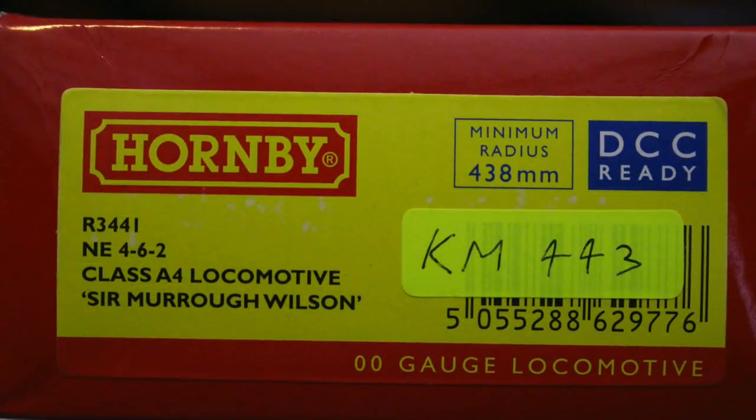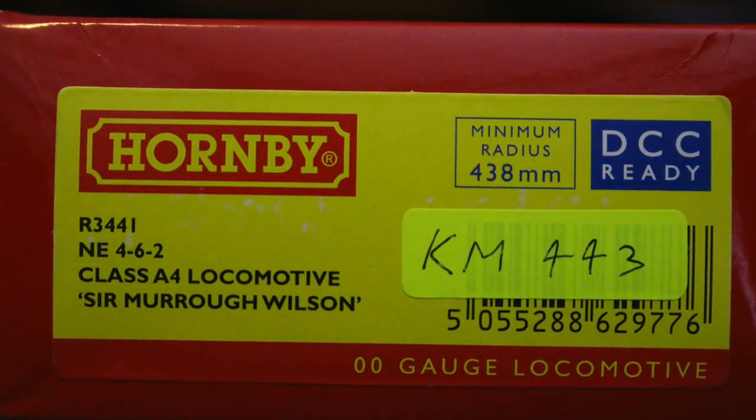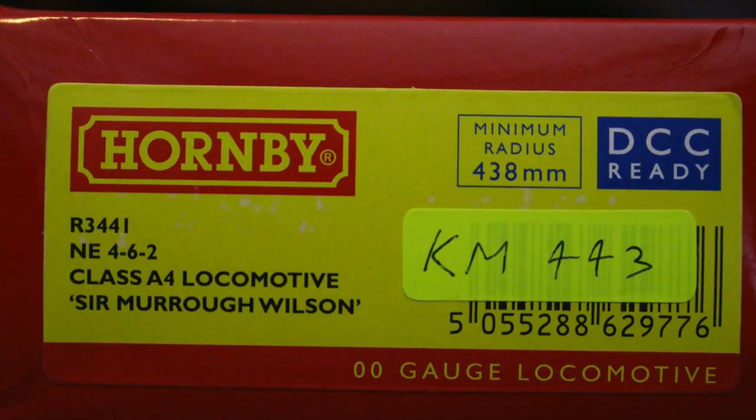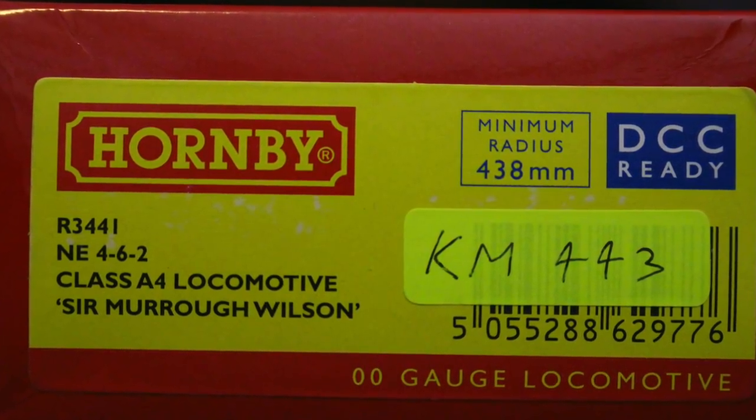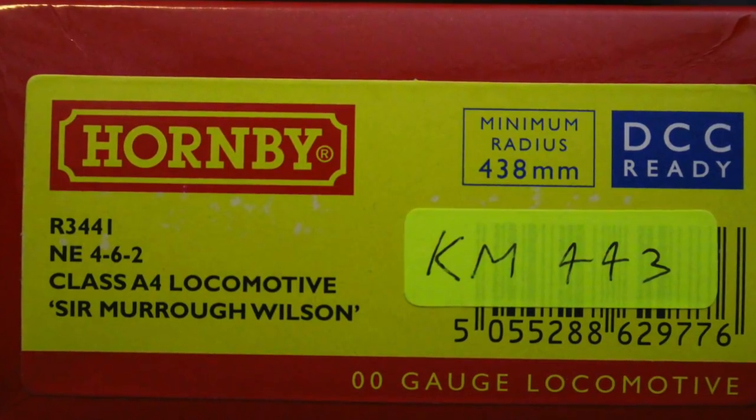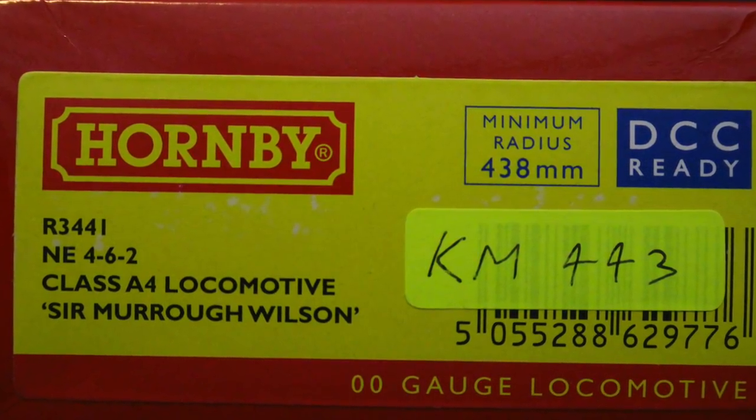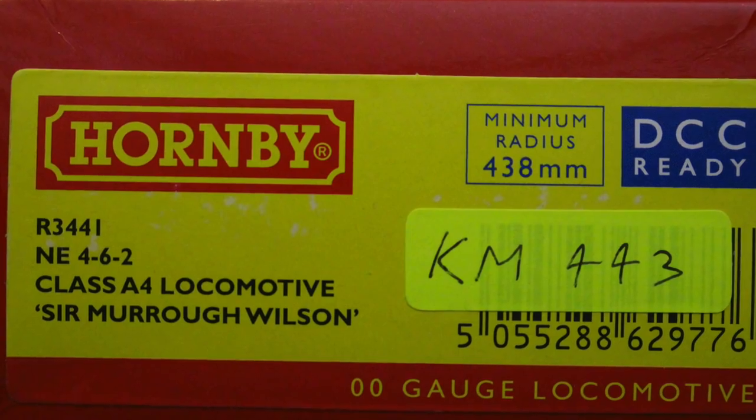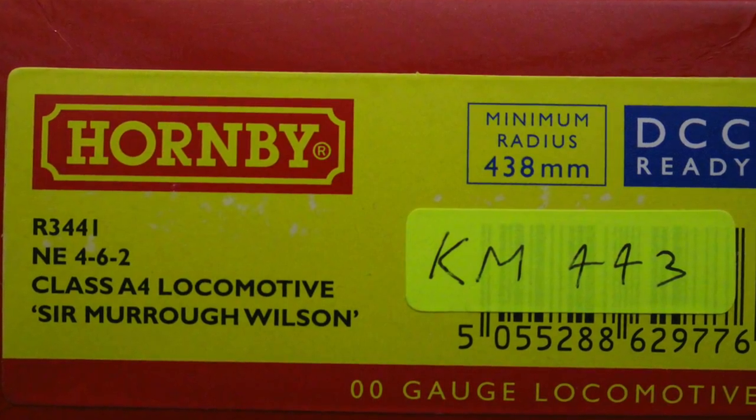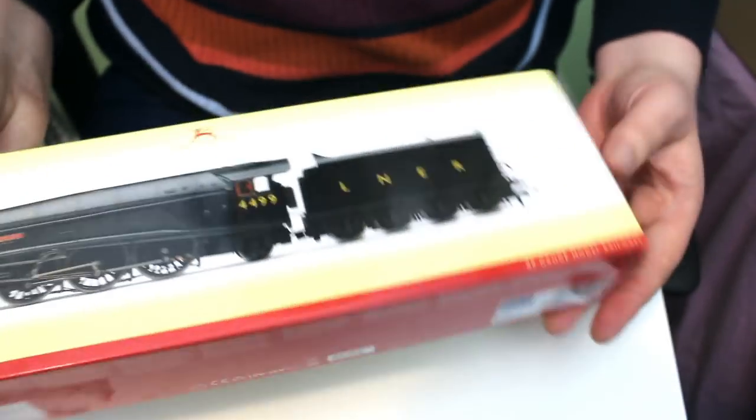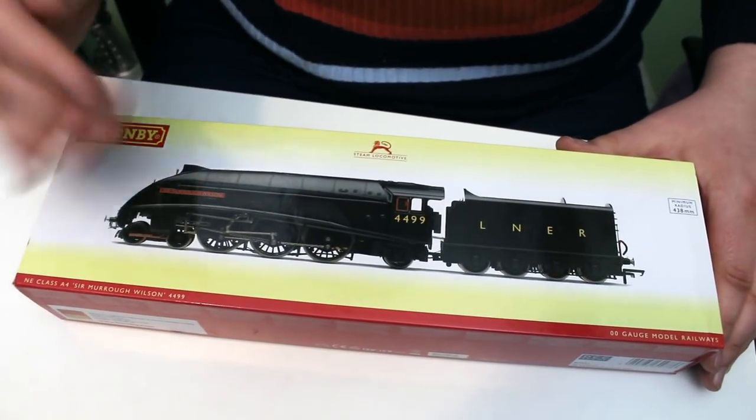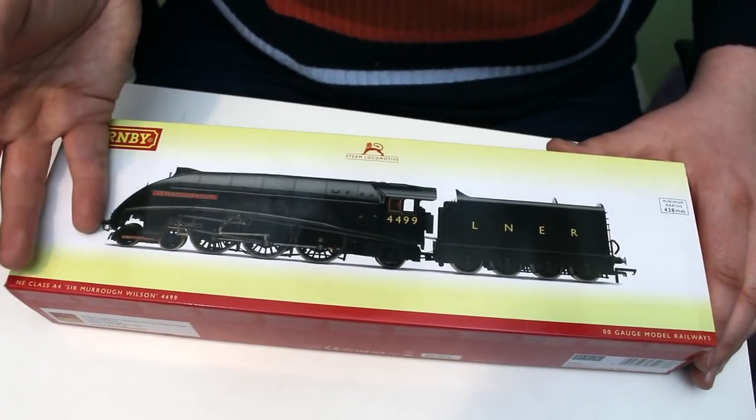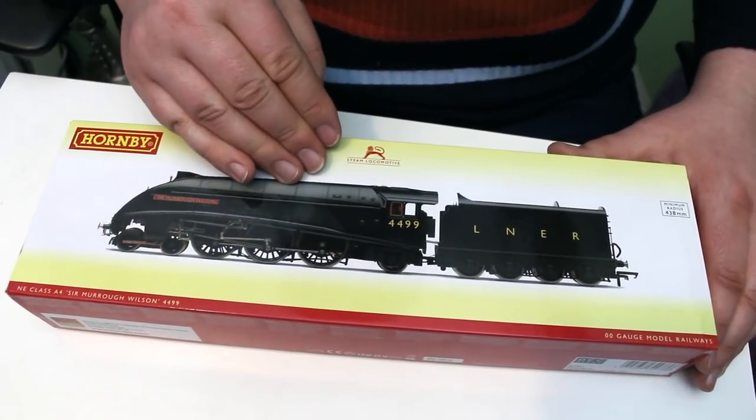We've got a catalogue number on the box, this was bought second-hand so we've got our R3441 Northeastern 4-6-2 Class A4 locomotive and I'm going to have to take a run-up on this name Sir Murrough Wilson, I think that's pronounced but gosh, why do these people have such difficult to pronounce names? Really unusual names, it has to be said and they would have been something like a director of the London and Northeastern Railway company.